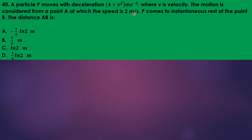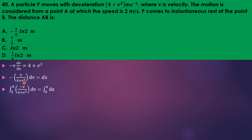Particle P moves with deceleration equal to v dv/dx, starting from point A with speed 2 m/s and coming to instantaneous rest at B. Since the equation involves velocity and we want distance, we use acceleration as v dv/dx rather than dv/dt. The deceleration makes it negative: −v dv/dx equals the given expression, and we separate variables to integrate.